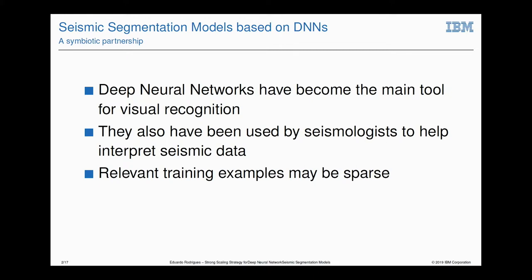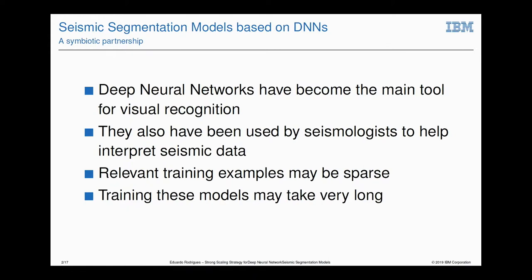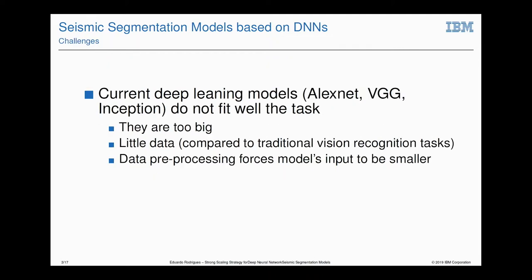These models serve as a tool in the toolbox of the seismologist to help interpret the data. Training data is sparse, at least compared to most other industries — if you think about Facebook having many billions of images, seismic has a sparse dataset. But training still takes very long, so you need to speed up the training, and parallel execution is definitely one strategy.